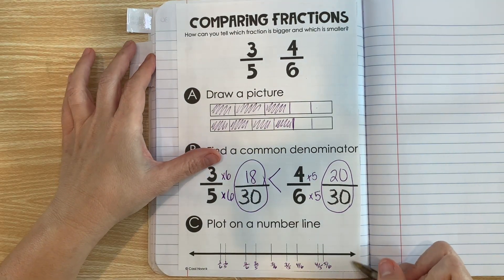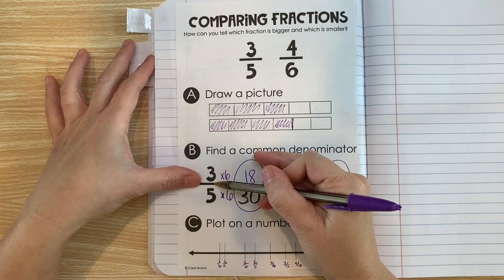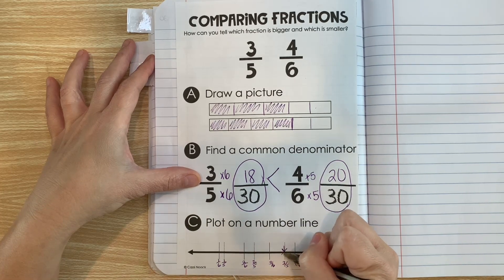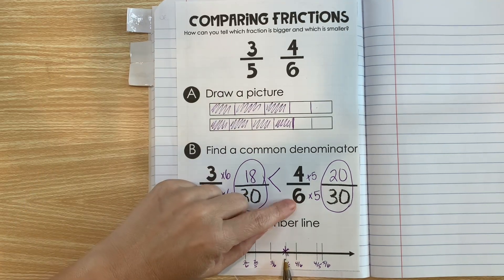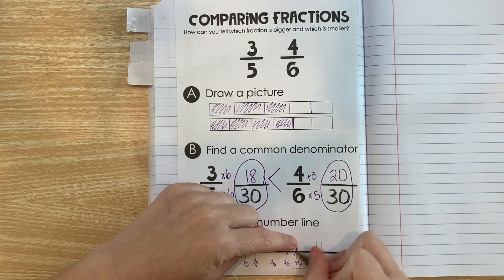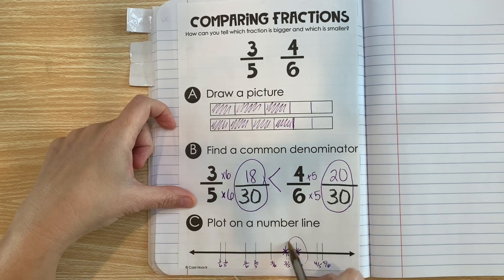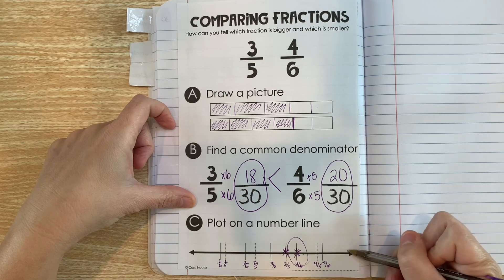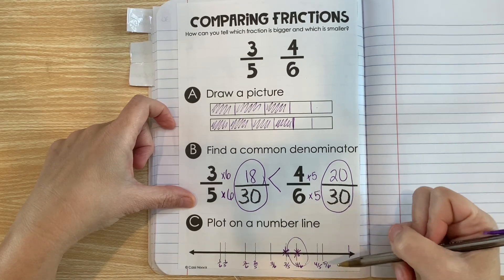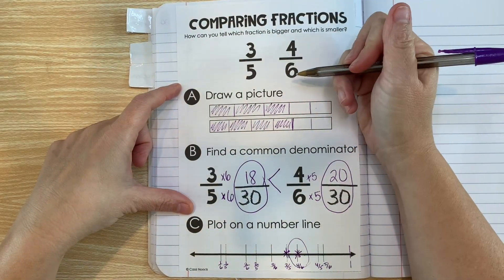Six-sixths would be at the end. All right, so now that they're labeled, we can compare them. So let's find three-fifths. Three-fifths is right here. Now let's find four-sixths. Well, four-sixths is right here. Which one is more? Well, four-sixths is more because it's closer to over here, which is the one whole.